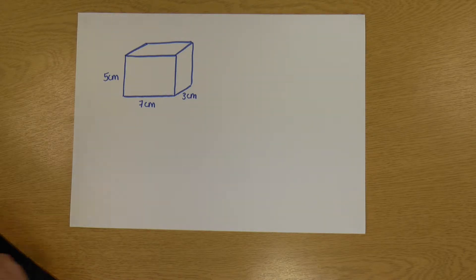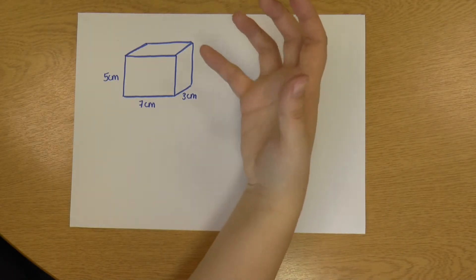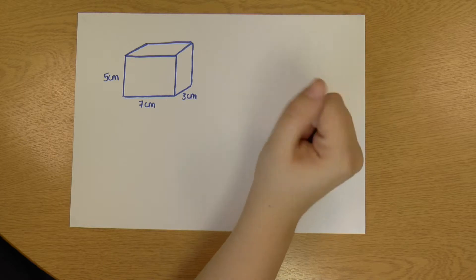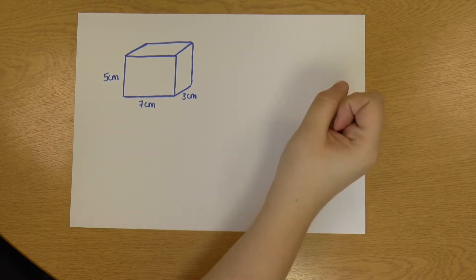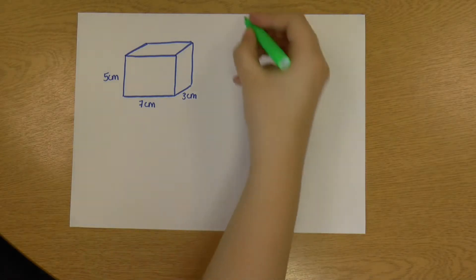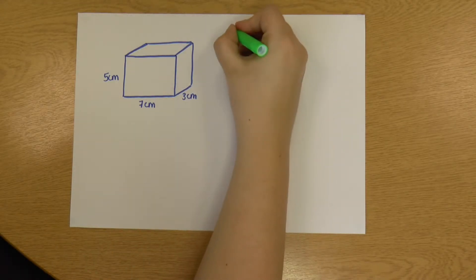So the surface area is, if I have a three-dimensional shape, it's the area of all of the sides added together, so each surface added together. So a cube has six sides, or a cuboid has six sides.